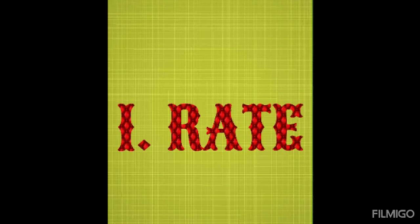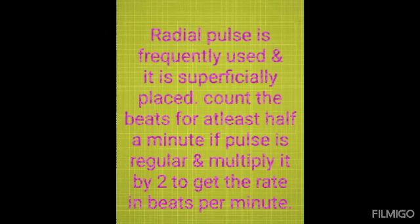The first parameter is rate. To assess the rate, radial pulse is frequently used as it is superficially placed. Count the beats for at least half a minute if the pulse is regular and multiply by 2 to get the rate in beats per minute. If pulse is irregular, count for a full 1 minute to get the approximate rate.